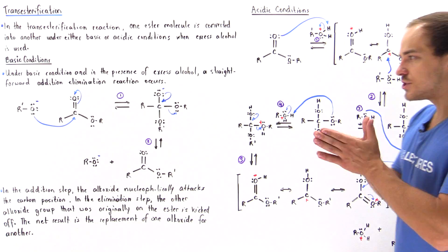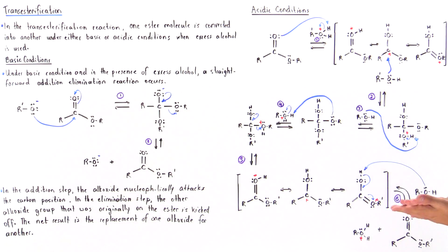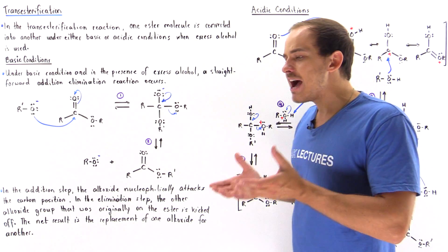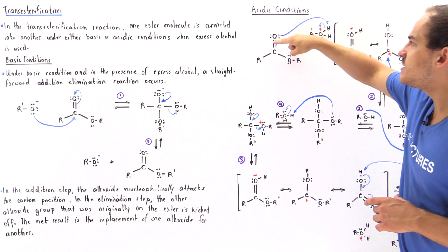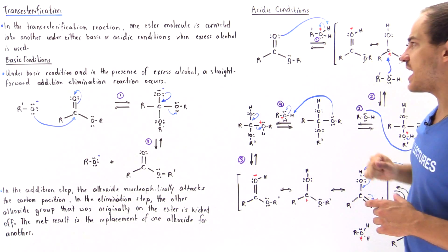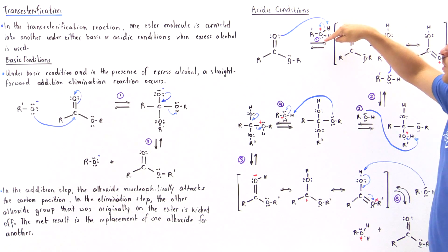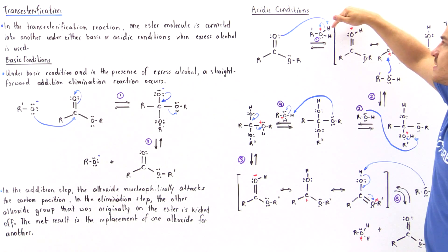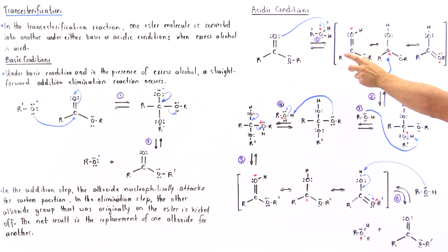The end result under acidic conditions is exactly the same, but instead of a two-step mechanism as we have for basic conditions, we have a six-step mechanism. In step number one, we don't have a strong enough nucleophile under acidic conditions. So in step number one, we have to protonate this oxygen of this carbon-oxygen bond so that we transform this poor Lewis acid into a much better Lewis acid. Then the alcohol can react with this Lewis acid. We have the protonated alcohol group that protonates this oxygen to form a resonance-stabilized intermediate — the protonated ester.